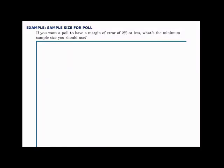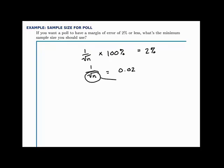In this example, we'll find a sample size that corresponds to a given margin of error. If we want a poll to have a margin of error of 2% or less, we can rearrange the formula to solve for the required sample size.